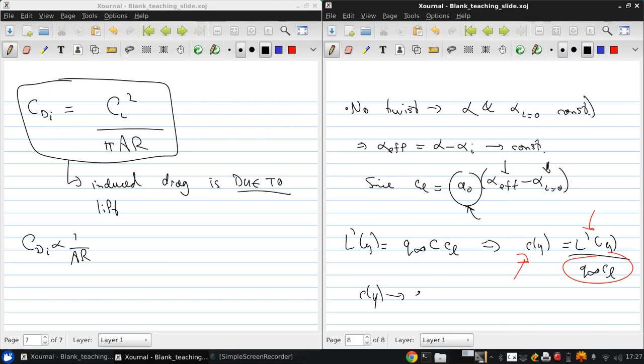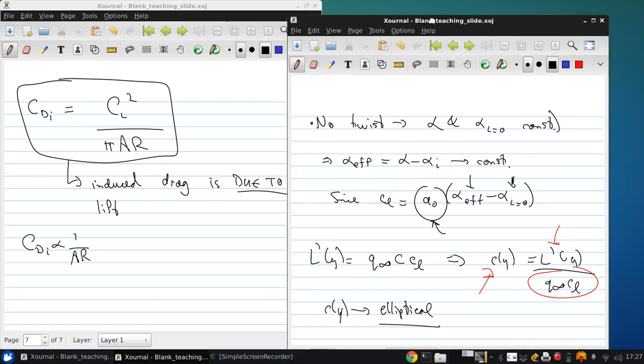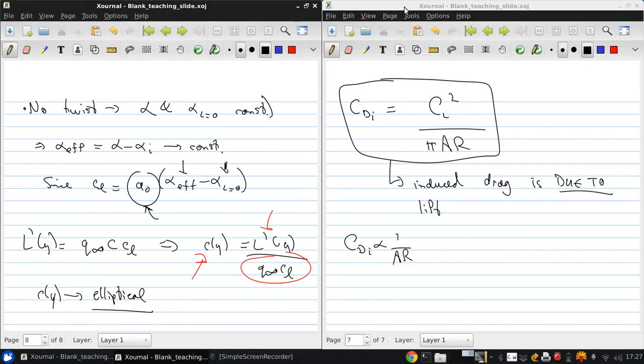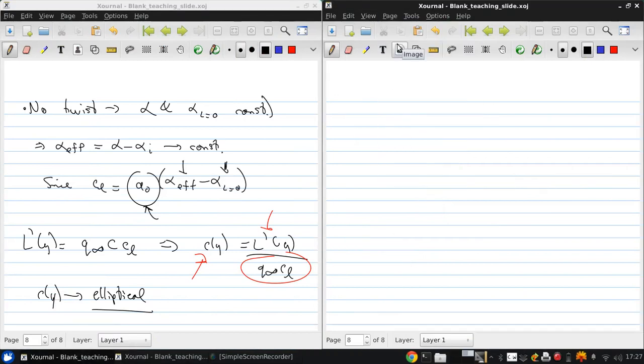So C of y is also elliptical. And this is how this ideal elliptical lift distribution is achieved. And in practice, there are aircraft that use this type of distribution. A great example is the Spitfire.